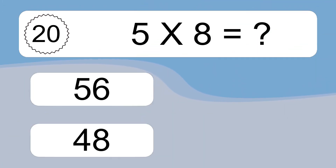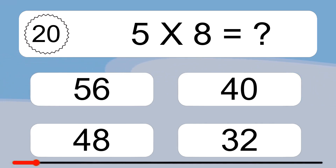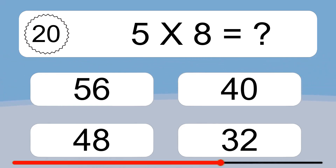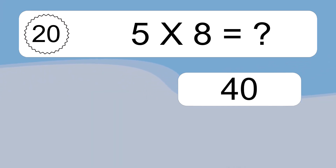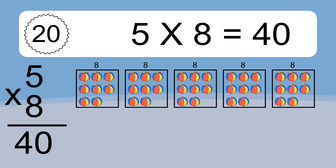5 times 8 equals what? 5 times 8 equals 40. We have 5 boxes and each box has 8 colorful balls inside. If you count all the balls in all the boxes together, you will have 5 times 8 balls. This equals 40 balls.